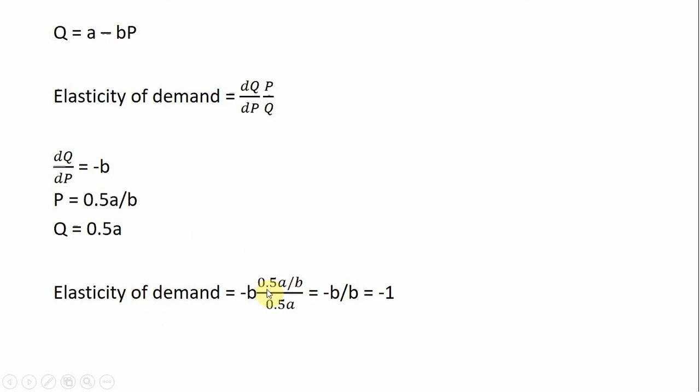So minus B, times 0.5A divided by B, and this is all divided by Q which is 0.5A. And this is nice. A lot of things cancel out. The one-half A and one-half A cancel out. Then we have minus B divided by B, and that's just minus 1. And that is the proof. At the midpoint on any linear demand curve, the price elasticity of demand is minus 1 or unit elastic. Hope you found this video helpful.